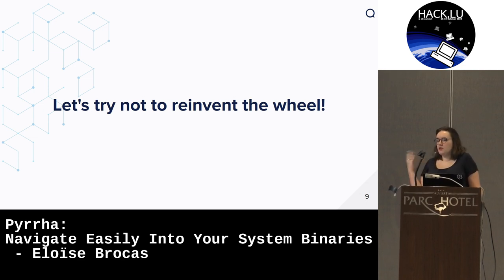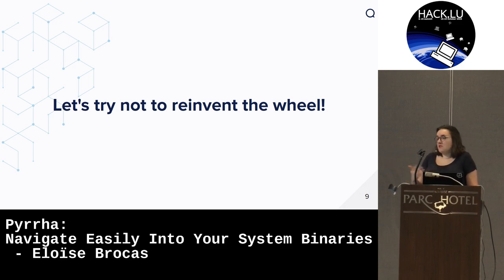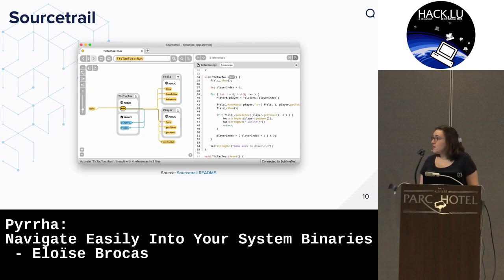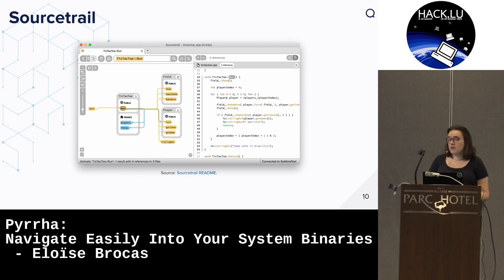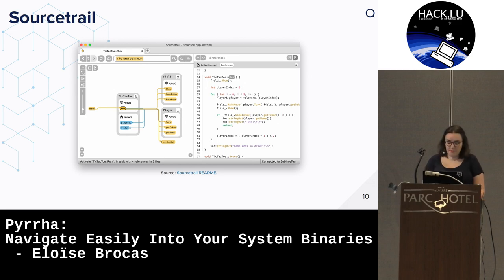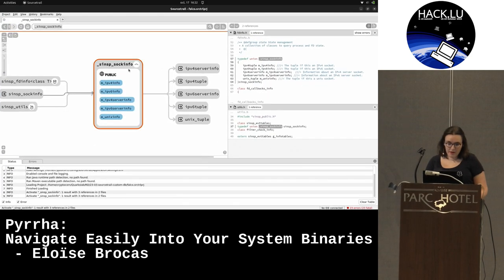I'm not good at developing graphical interfaces because I'm not a front-end developer, so I checked if some tools already exist. I was really lucky because the tool SourceTrail already exists to do source code analysis. I really advise you to use this tool - if you need to analyze C or C++ code, it's really efficient. You give it the makefile or the cmake, run a little tool on it, and then it can be indexed by SourceTrail.